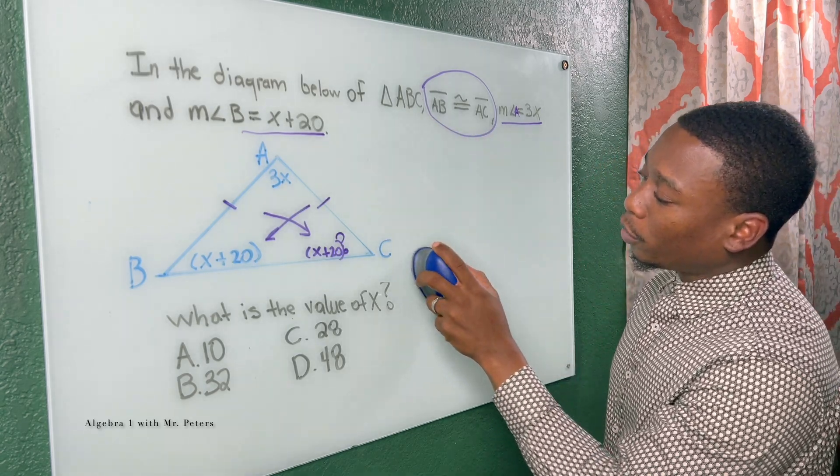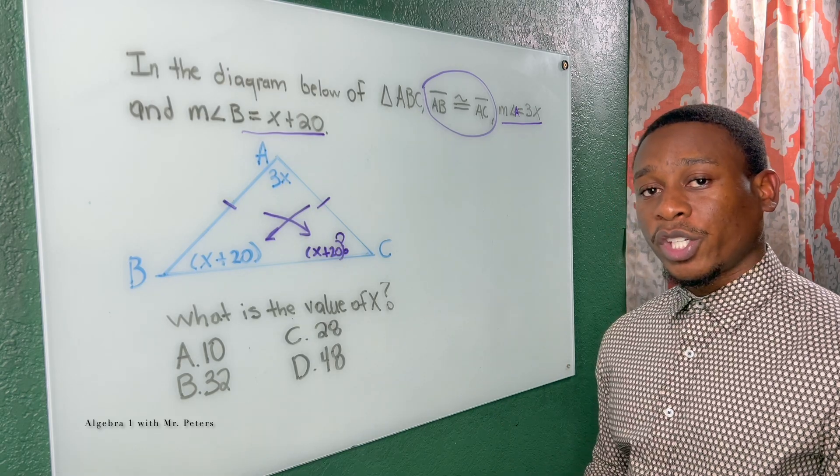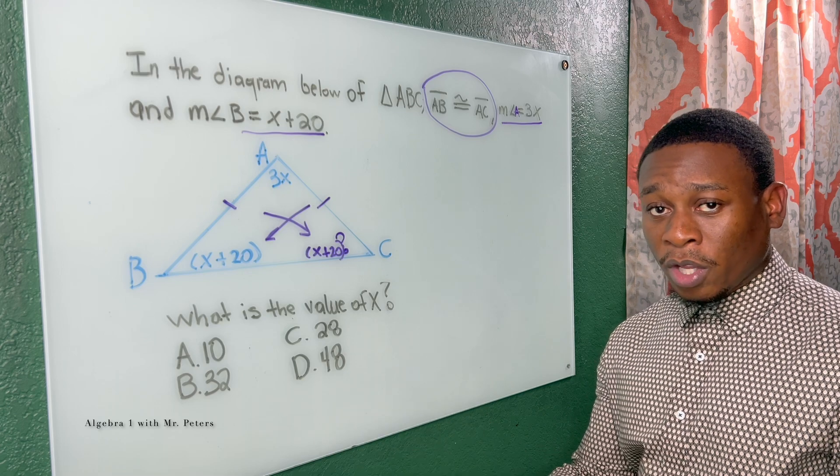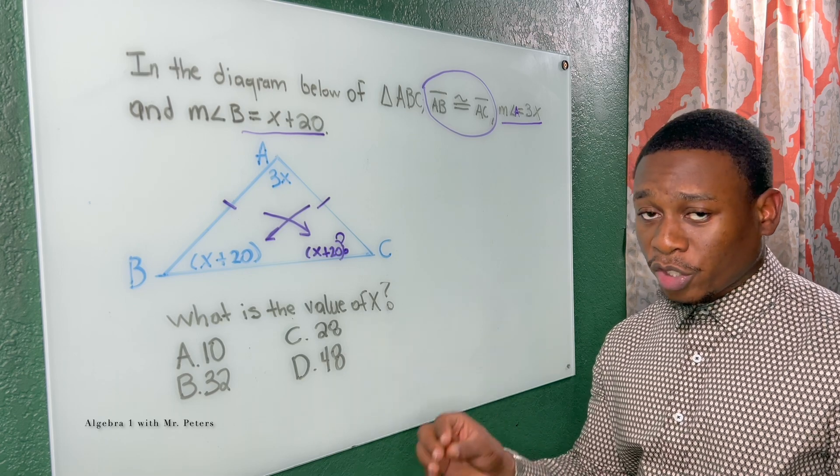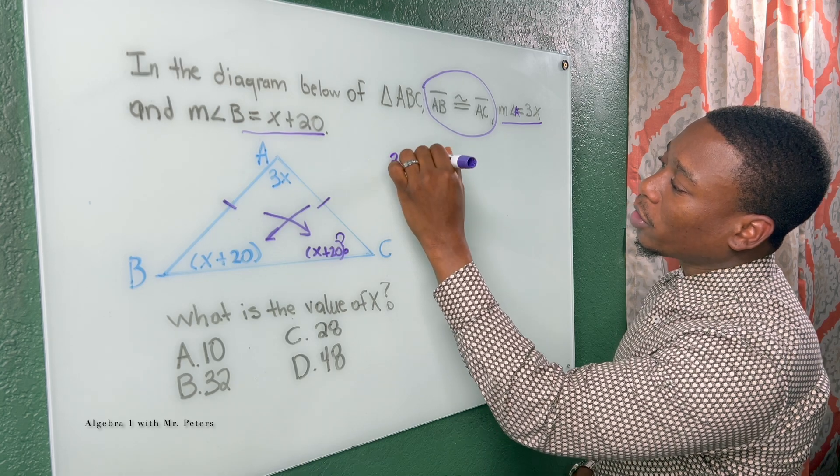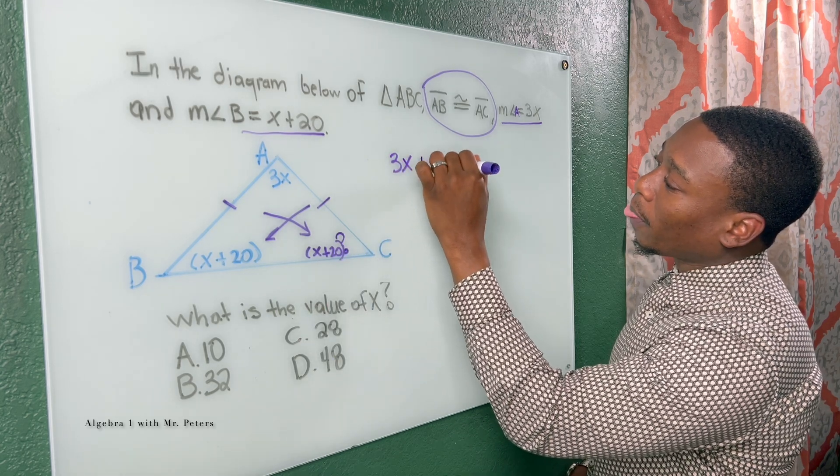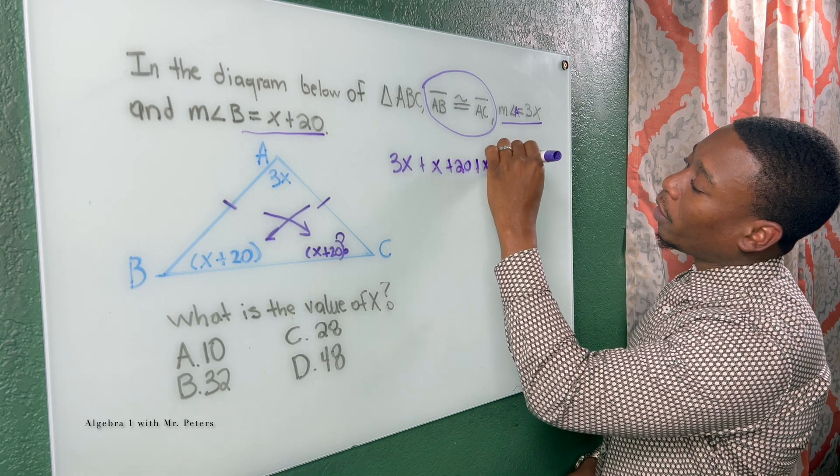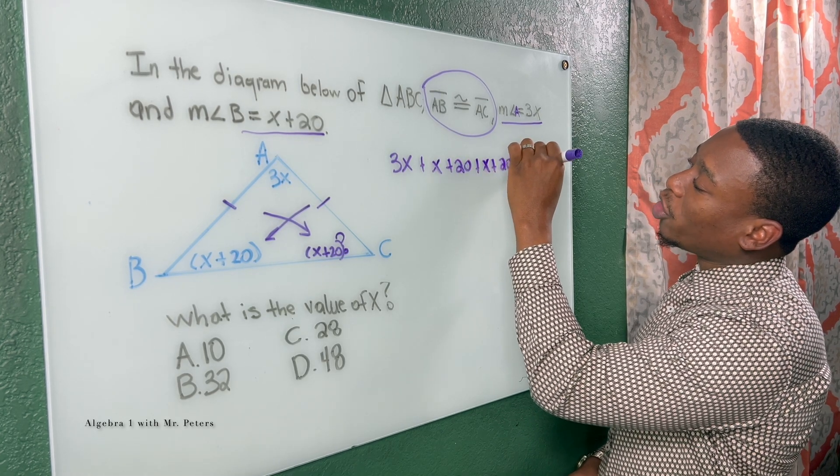Now that we got that down, we have to create an equation, and we should know that all triangles, their interior angles measure to 180 degrees. So when I set up my equation, 3X plus X plus 20, plus X plus 20 again, is equal to 180.